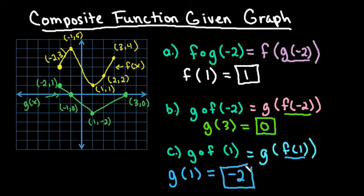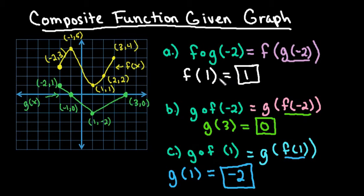That gives me my final answer. So if you're given a graph, you're going to start with the inner function — for example, g of negative 2 — find your x-coordinate on your g graph, find the output, and then go to the other equation and find the corresponding output. Thanks for watching. If you have any questions or additional topics you need me to cover, please let me know, and if you get a chance, please subscribe.